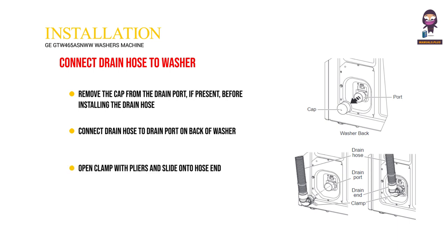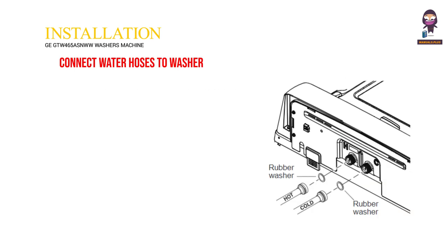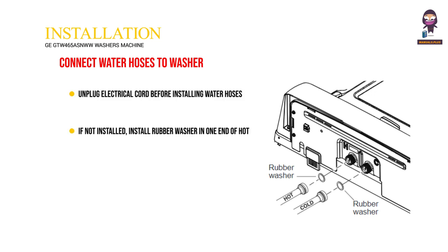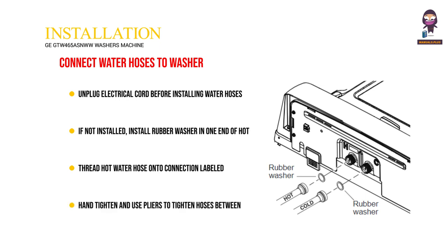Open the clamp with pliers and slide onto the hose end. Holding the clamp open, push the hose end onto the drain port until fully seated. Connect water hoses to the washer: unplug the electrical cord before installing water hoses. If not installed, install a rubber washer in one end of the hot water hose. Thread the hot water hose onto the connection labeled H at the top rear of the washer. Hand tighten and use pliers to tighten hoses between one-eighth and one-quarter turn beyond hand tight.